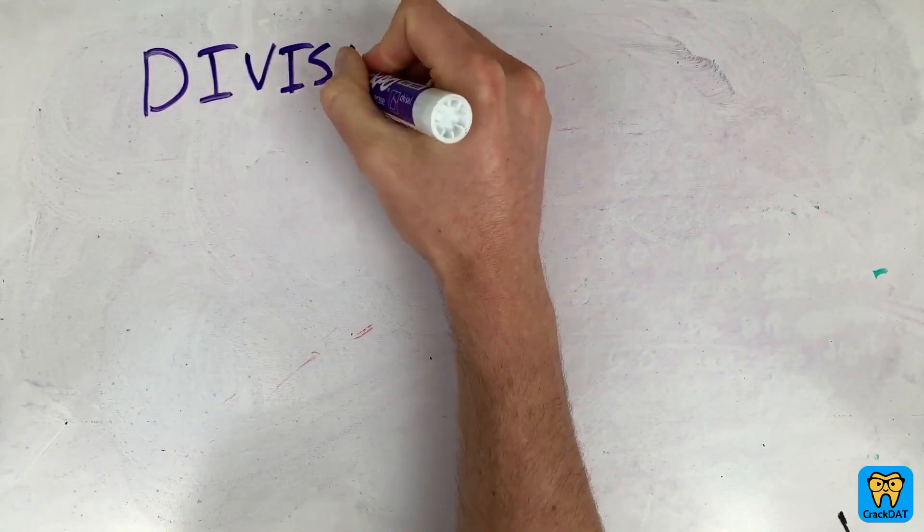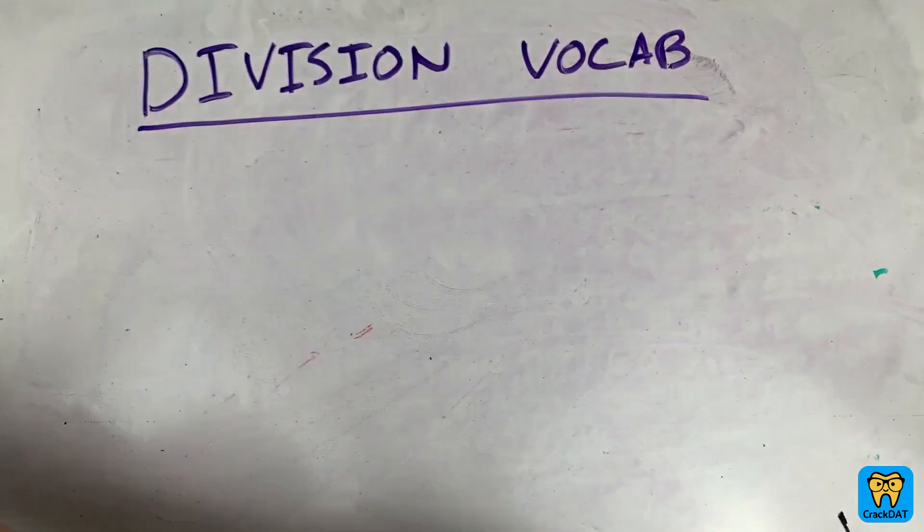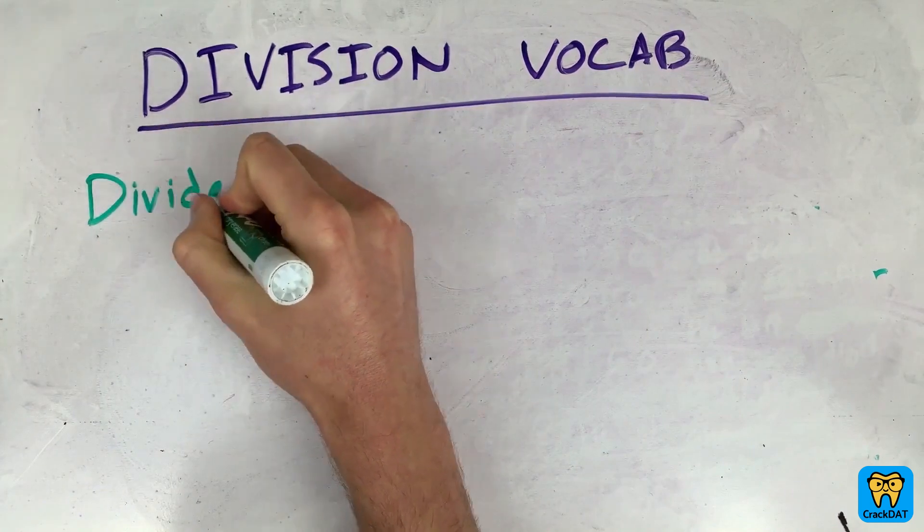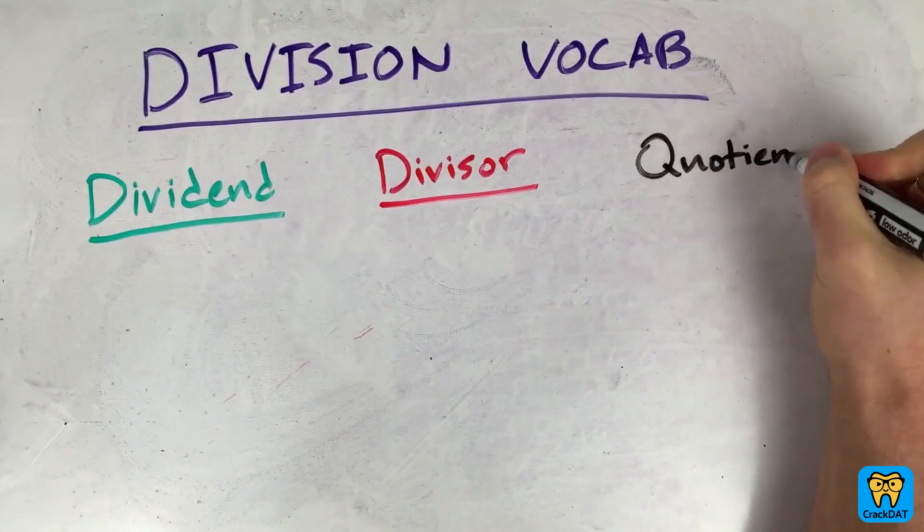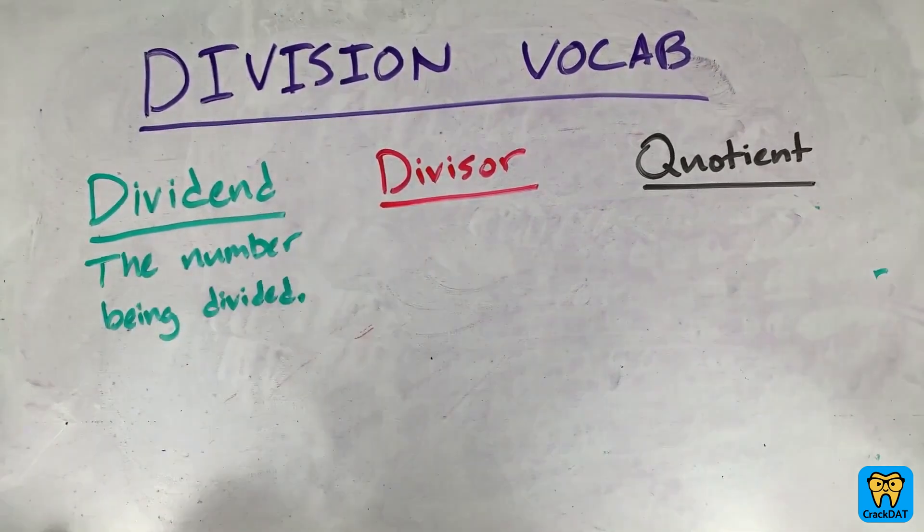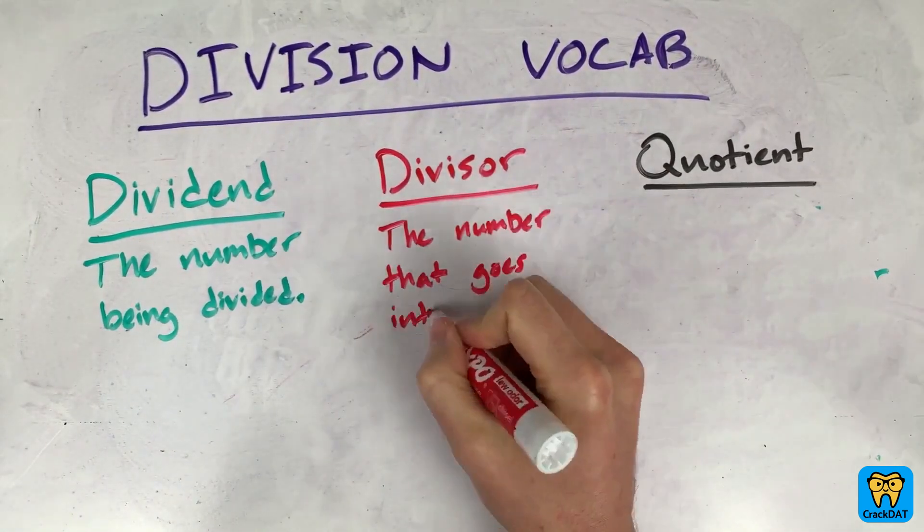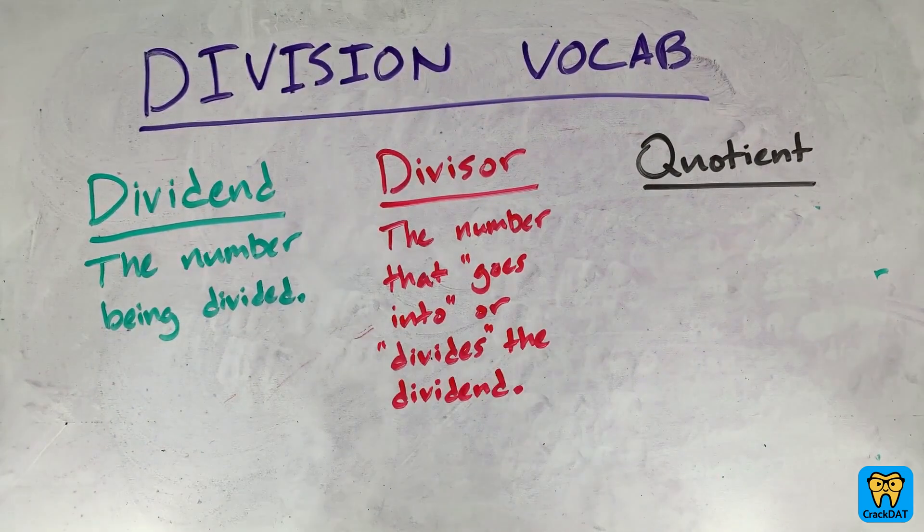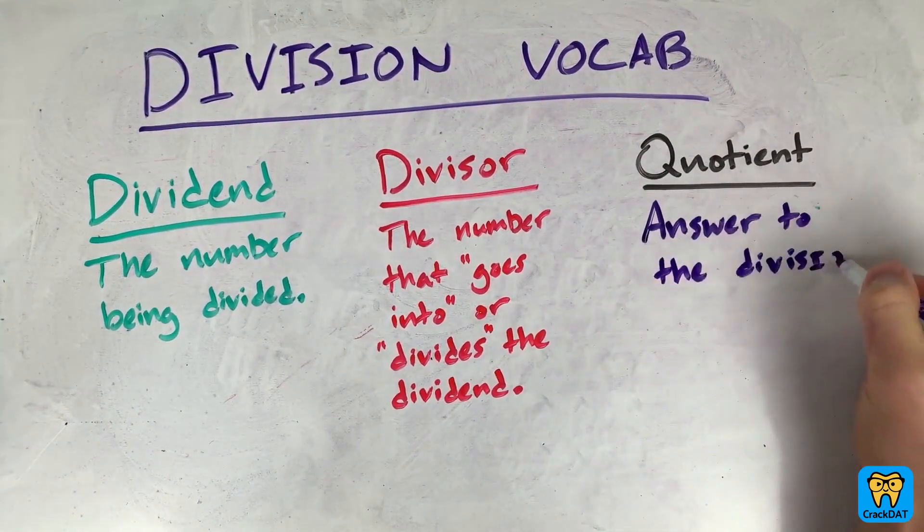Let's start off by getting some vocab out of the way. There are three parts to a division. There's the dividend, the divisor, and the quotient. The dividend is the number that is being divided. The divisor is the number that goes into the dividend. And the quotient is the answer to the division problem.